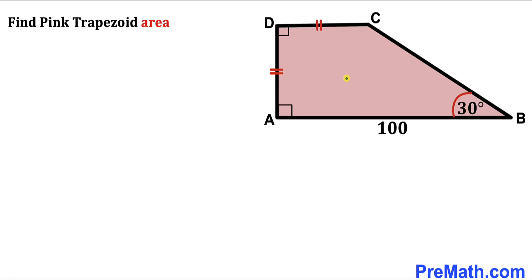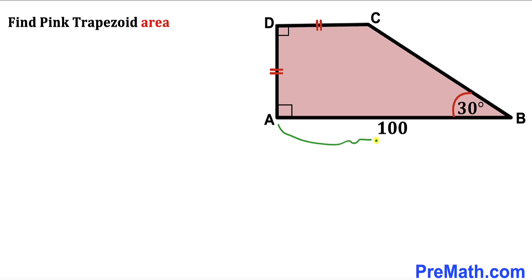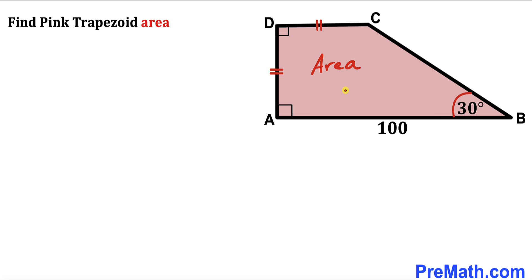Welcome to pre-math. In this video we have got this pink shaded trapezoid ABCD as you can see in this diagram, such that this side length AD equals to this side length CD. Moreover, this base AB is 100 units, this angle ABC is 30 degrees, and our task is to calculate the area of this pink shaded trapezoid ABCD.